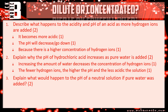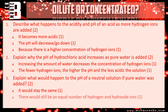Question three: explain what would happen to the pH of a neutral solution if pure water was added. If it's already neutral, you've got the same number of hydrogen and hydroxide ions, so nothing will happen. Your first mark: it would stay the same. Your second mark: there would still be an equal number of hydrogen and hydroxide ions, meaning nothing will happen.